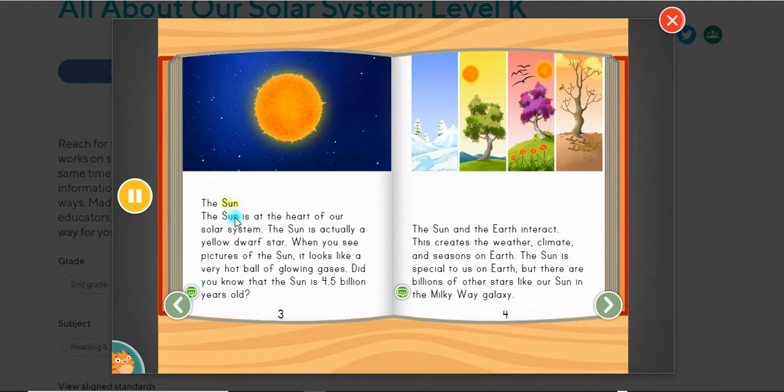The Sun. The Sun is at the heart of our solar system. The Sun is actually a yellow dwarf star. When you see pictures of the Sun, it looks like a very hot ball of glowing gases. Did you know that the Sun is 4.5 billion years old?